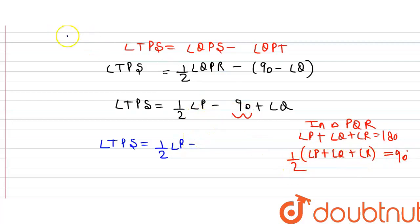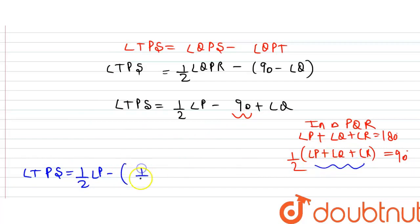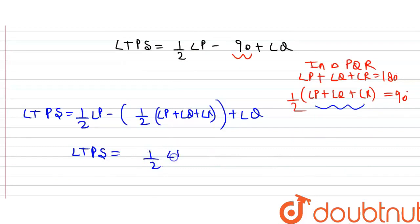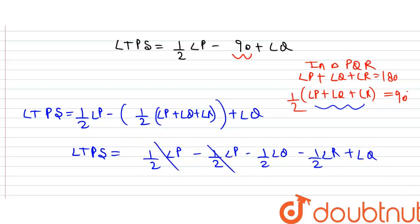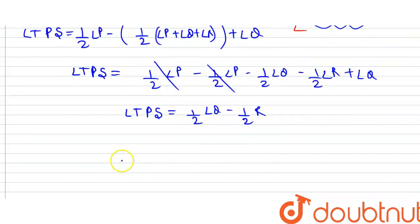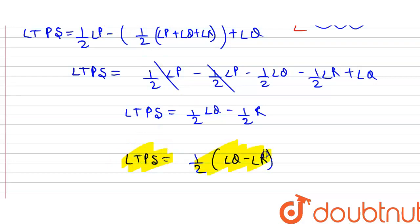So angle TPS equals half of angle P minus (half of angle P plus half of angle Q plus half of angle R) plus angle Q. Opening the bracket: half P minus half P minus half Q minus half R plus angle Q. The half P terms cancel, and minus half Q plus angle Q gives plus half Q. Therefore, angle TPS equals half of angle Q minus half of angle R.